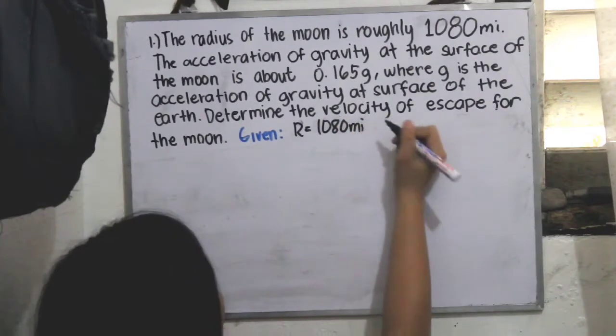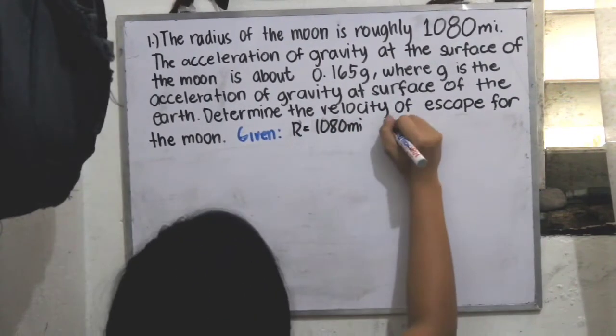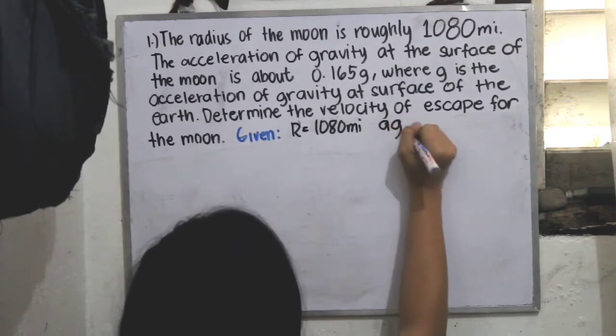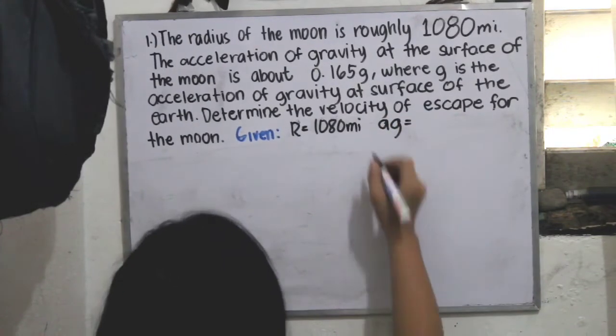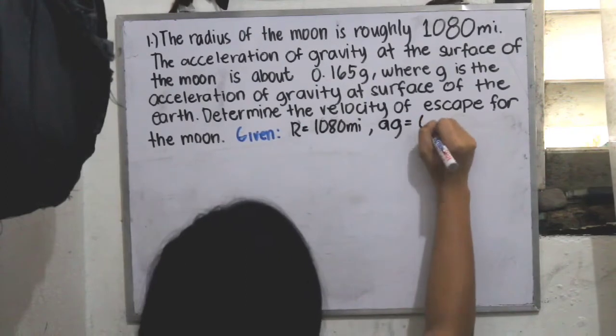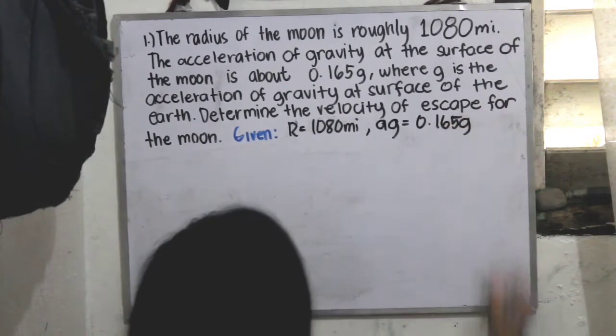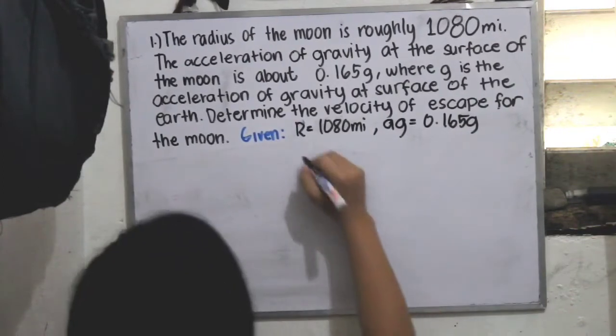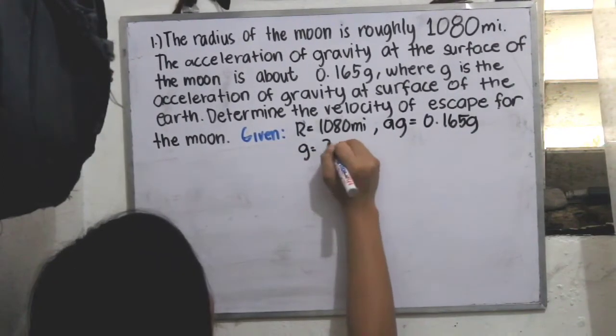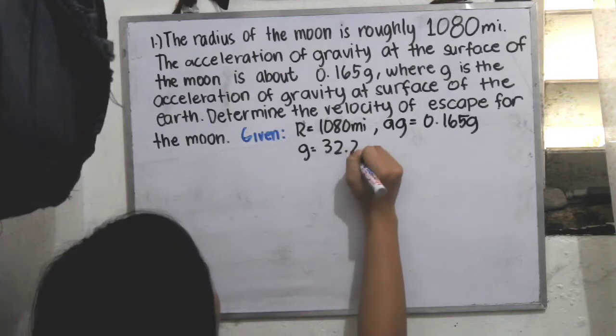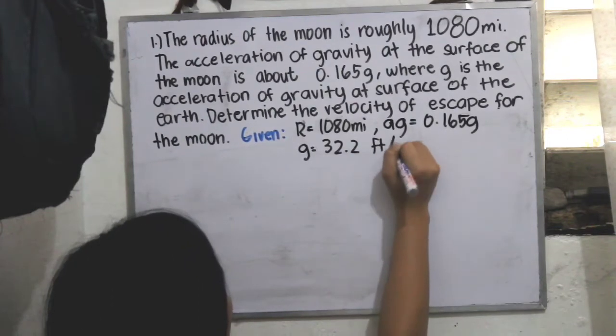We are also given the acceleration of gravity at the surface of the moon, which is 0.165 g. Also, we know that the gravity in terms of feet is equal to 32.2 feet per second squared.